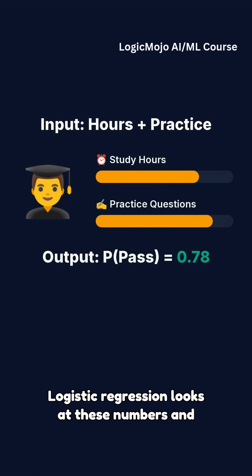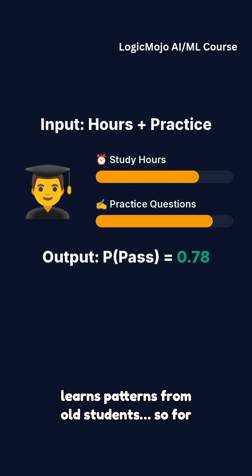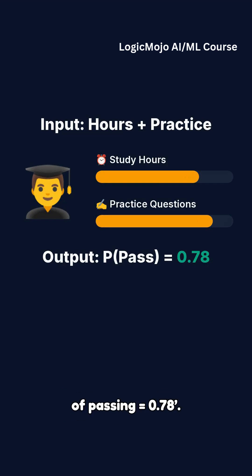Logistic regression looks at these numbers and learns patterns from old students. So for a new student, it can say: chance of passing equals 0.78.